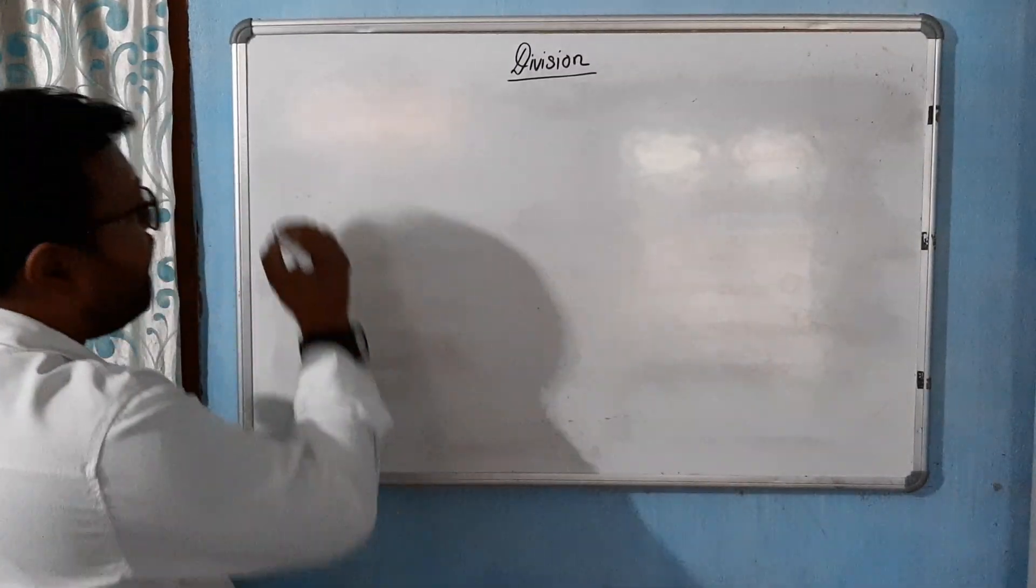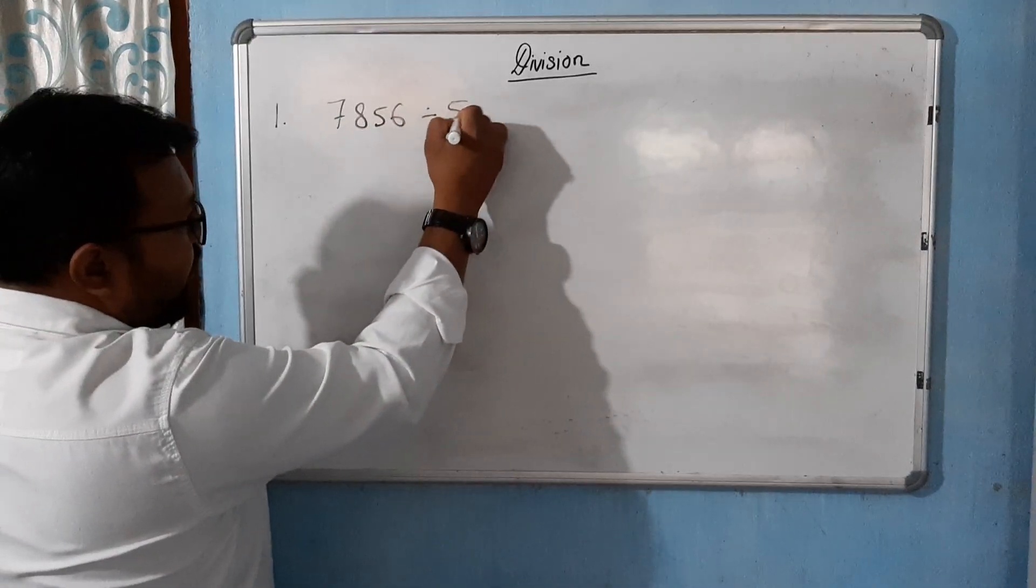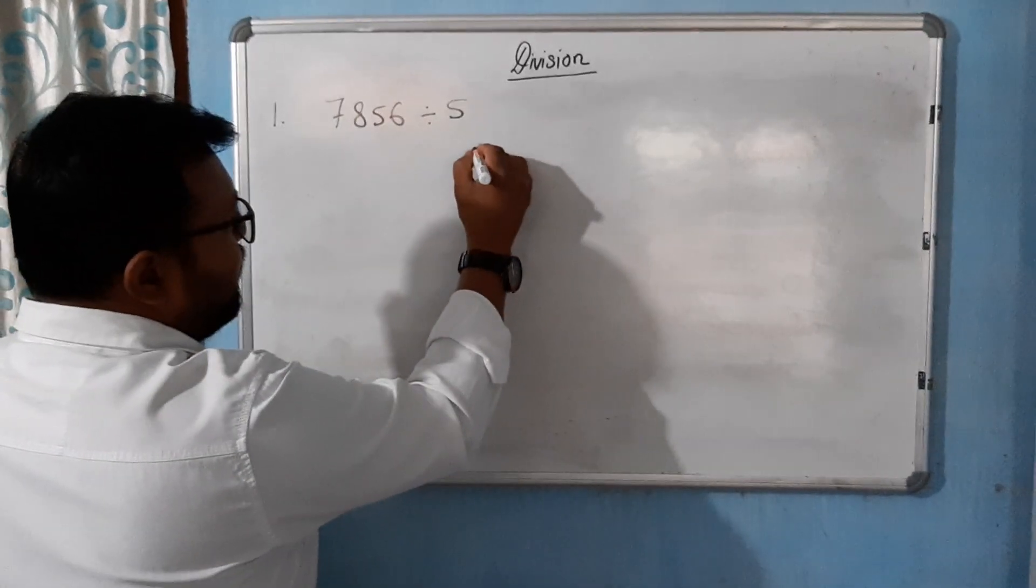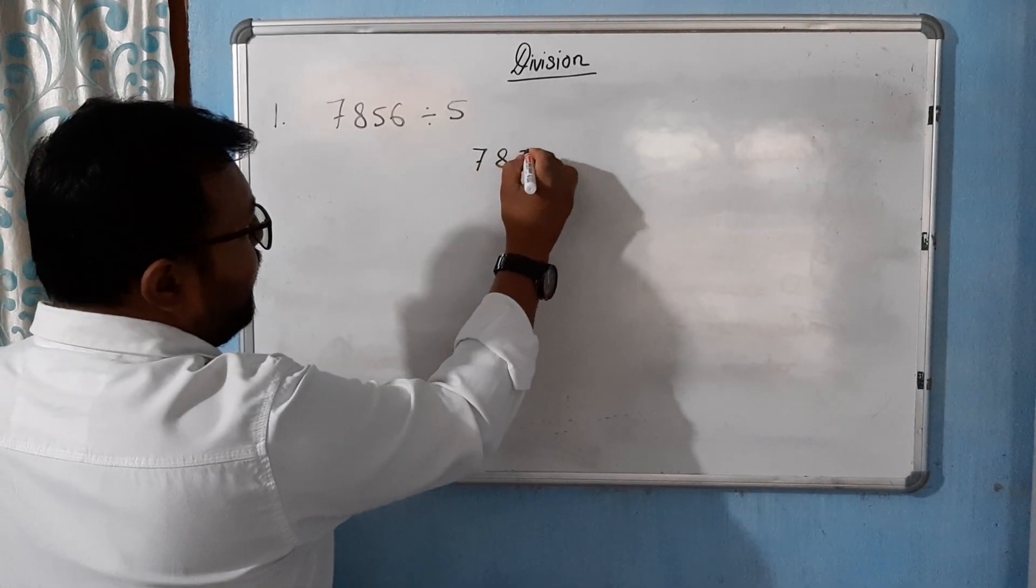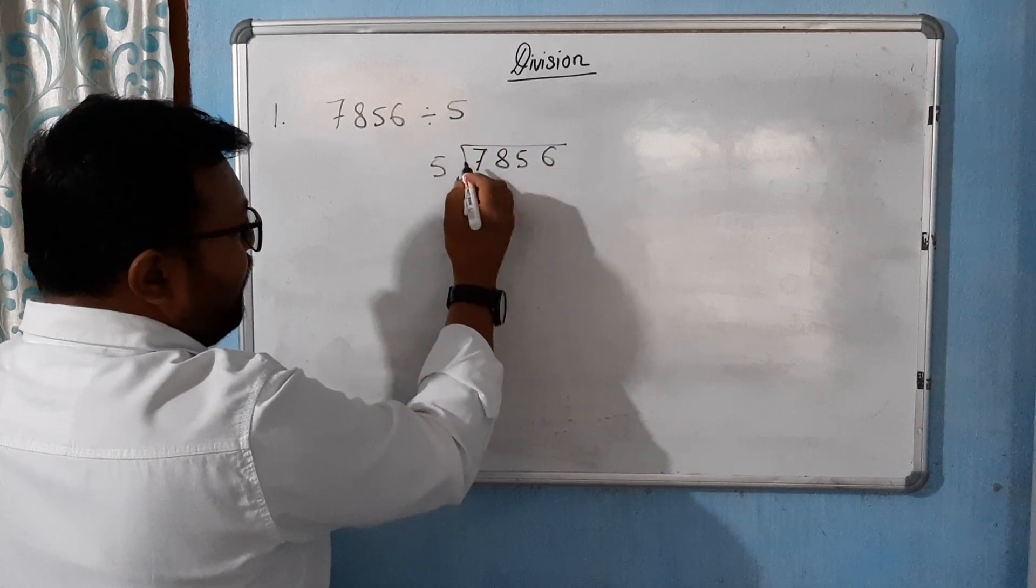In B, question number 1 is this: 7856 divided by 5. See here, 7856 divided by 5.